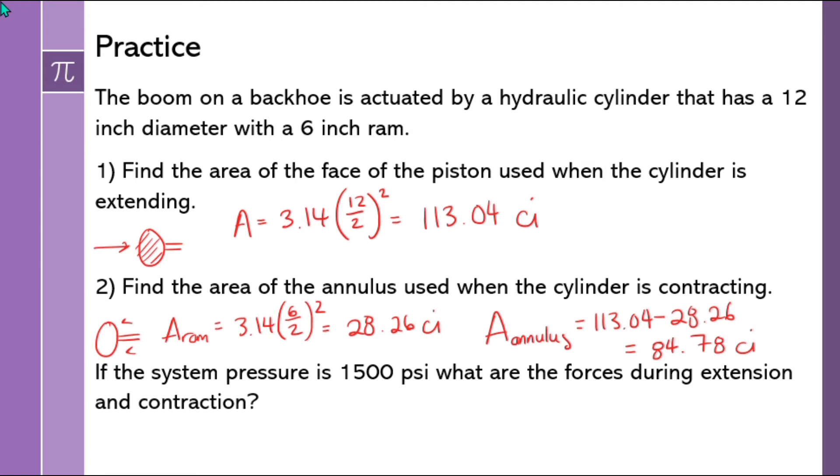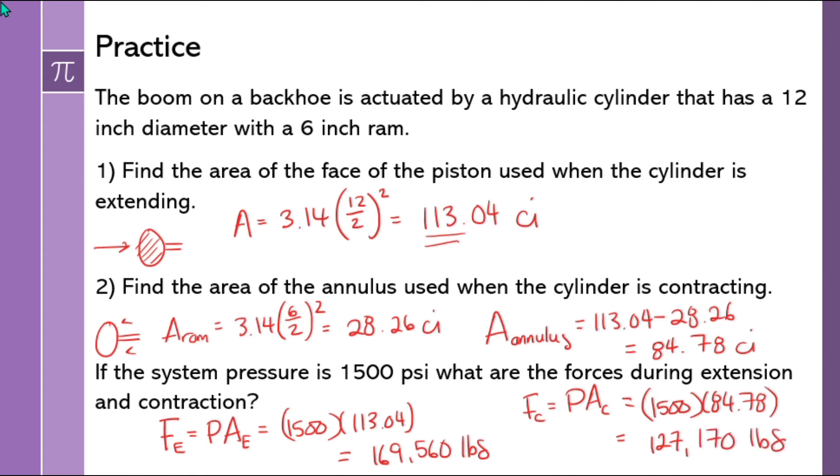So if the system pressure is given to us at 1,500 psi, what are the forces during extension and contraction? The force during extension is the pressure times the area during extension, which is 113. So we have 1,500 psi times 113.04. It's going to give us a massive 169,560 pounds of force. That's impressive. How about our force when we're contracting? It's going to be the pressure, same pressure, but we're going to have the area when we're contracting, which is the same as the annulus area. 1,500 multiplied by 84.78 to get a little bit smaller force because we didn't get to put that pressure on the entire area because of the RAM.